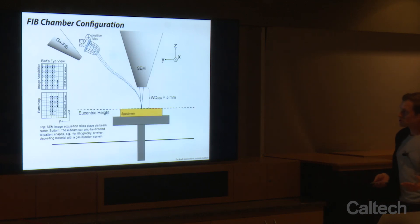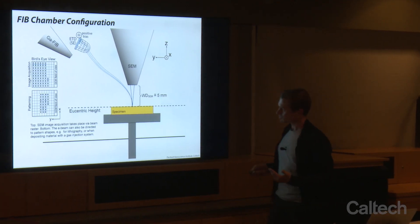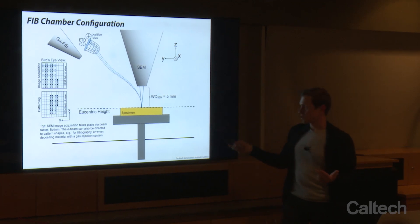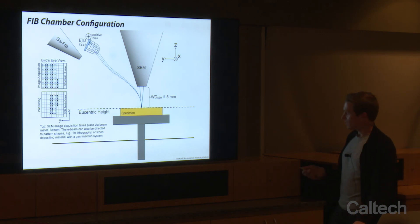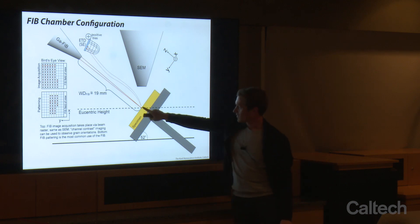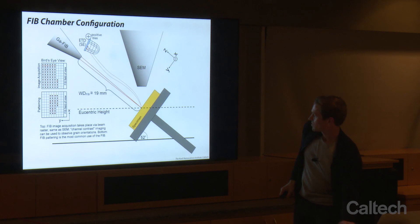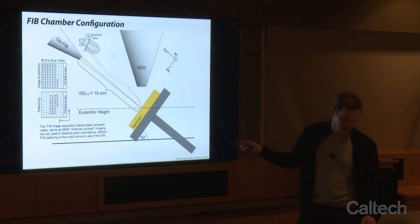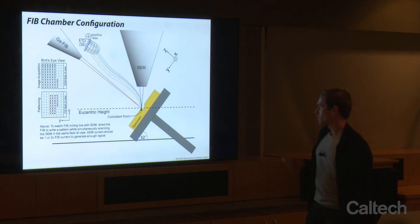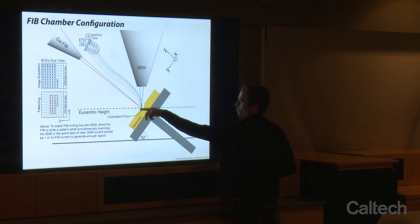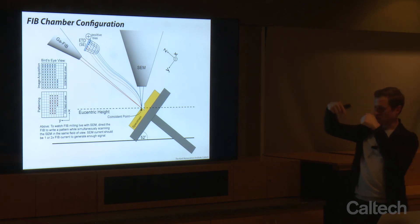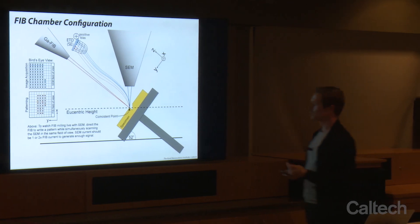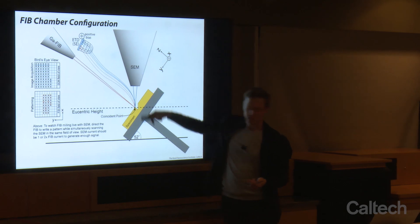We can look at the chamber configuration in cartoon form. On our systems, eucentric height is about five millimeters. The idea with eucentric height is that it's the place in the chamber where you can look at the same part of your specimen at any tilt — so if I tilt to 52 degrees, I'm hitting the same point on my specimen. It's important to be at eucentric height because ultimately we want to be able to image with the SEM what we're cutting with the gallium ion beam. We design the coincident point where the two beams cross to also be eucentric height, so we can do focused ion beam work at any tilt angle and also see it.